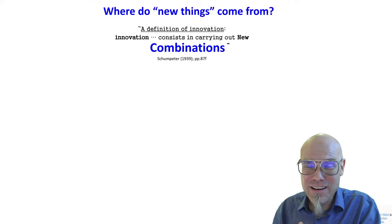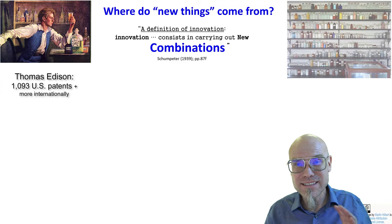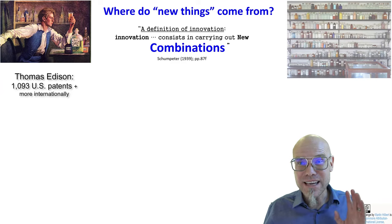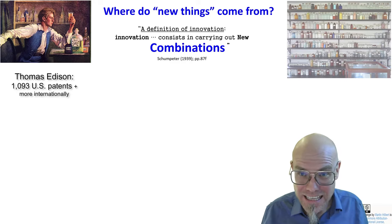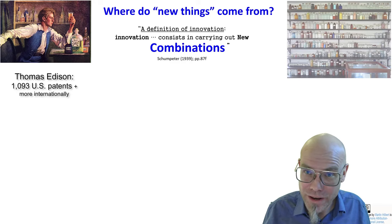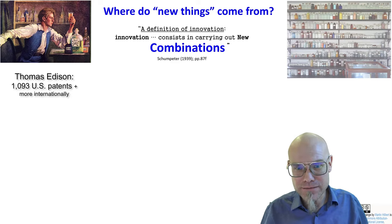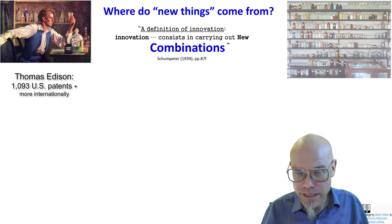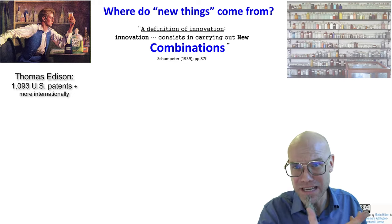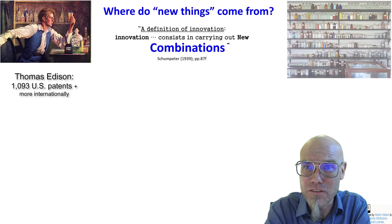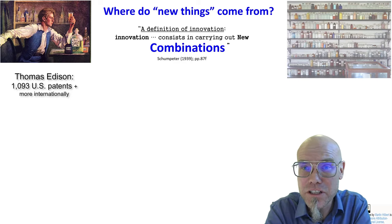Let's look at maybe the most prolific inventor we ever had: Thomas Edison. More than 1,000 patents in the United States alone, and many more internationally. He literally invented the light bulb — the light bulb went off with Thomas Edison. And how did he do that? Well, he carried out a lot of new combinations. If we follow that definition of innovation, let's look at what his workflow was.